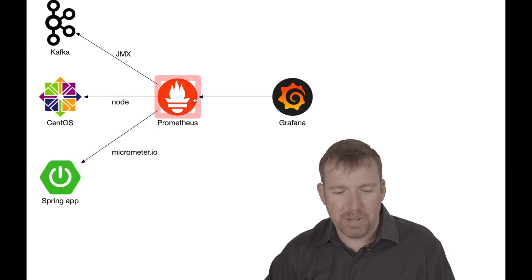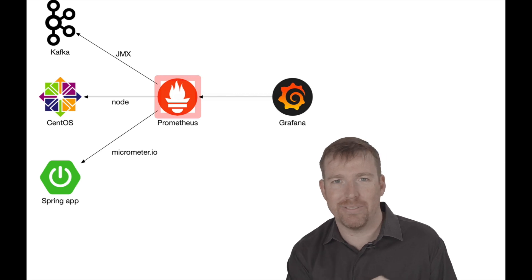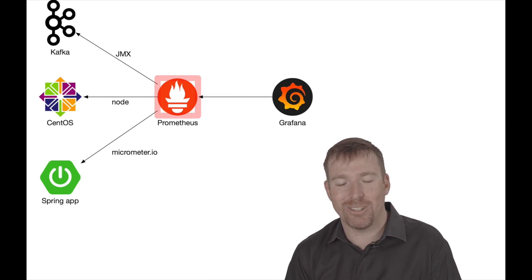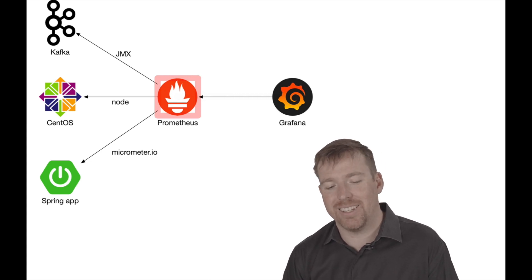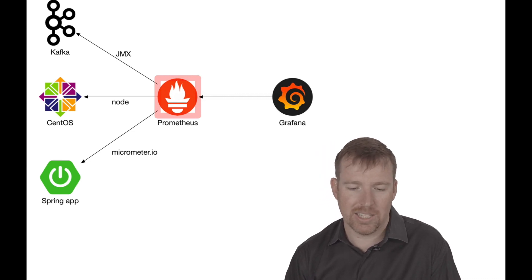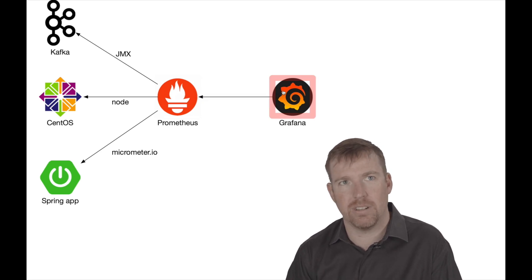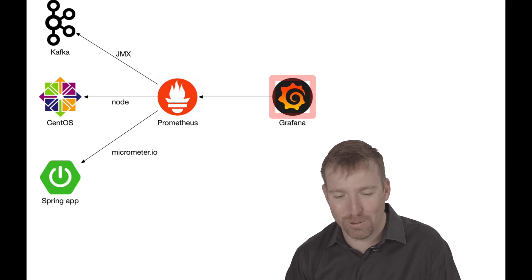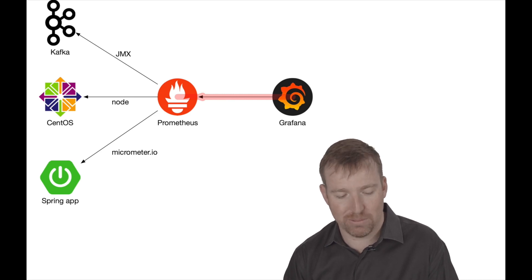Prometheus has something called PromQL — Prometheus Query Language — and I think it's a really amazing and concise way of expressing queries on time series data. I would argue that the visualization is a bit weak in Prometheus and it can be a source for Grafana. Grafana is kind of like the Kleenex of operational dashboards, and it's pulling data out of Prometheus. So this is what we've got set up.